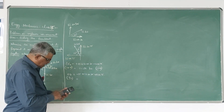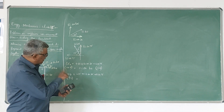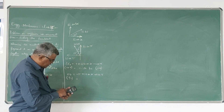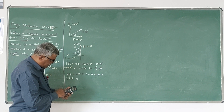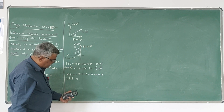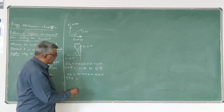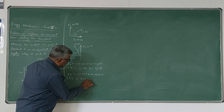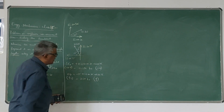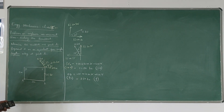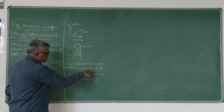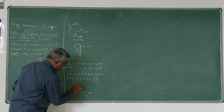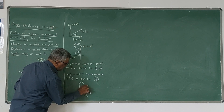Sigma Fy with upward positive, downward negative: minus 15 plus 12 sin 30 plus 12 sin 75, which gives 2.59 kN upward. Since both sigma Fx and sigma Fy are positive — sigma Fx towards right and sigma Fy upward — the resultant R lies in the first quadrant.